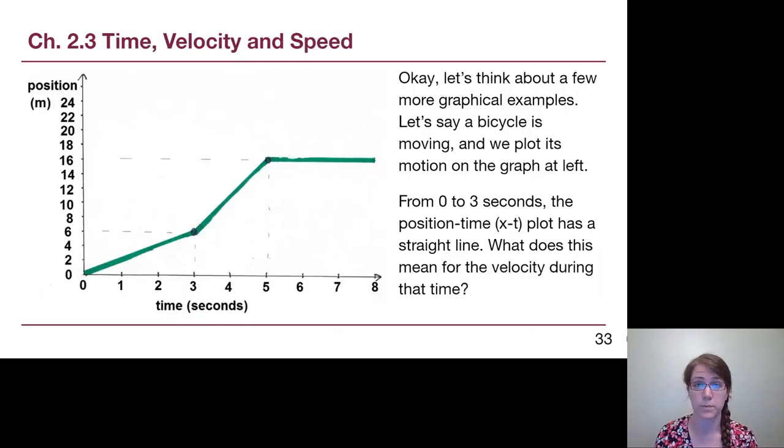So let's think about a couple more graph examples. We will have to think about that idea of drawing tangent lines, but what I want to focus our attention on too is that we need to make sure we understand the idea of graphs. Being able to read them the same way that we can read the text on this slide. So let's start out by acclimating ourselves a little bit. Let's say that this is a bicycle and we're plotting the motion or the position of this bicycle over time. From 0 to 3 seconds, the position time plot has a straight line on it. What does that mean about the velocity during that time range? Hopefully you thought to yourself or said out loud that it was constant. If we see a straight line on a position time graph, then we are talking about something that is cruising at a constant velocity.